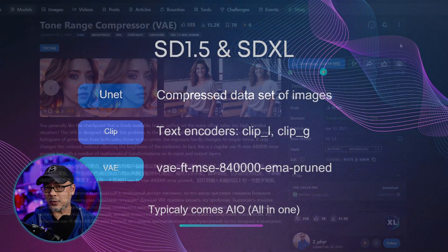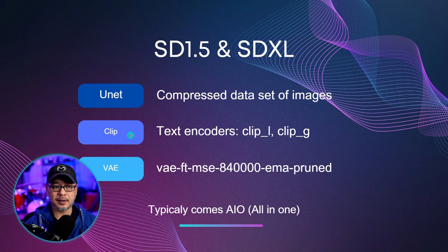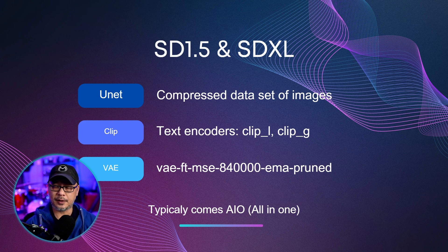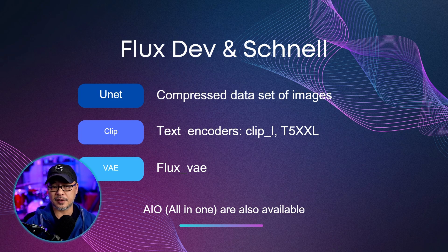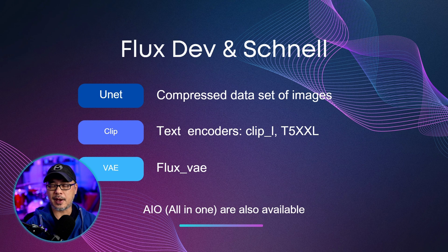As we got further into the development of SDXL, generally speaking, SDXL models were all-in-one — so the unit, clip, and VAE were all put together into one file. When we look at Flux Dev and Schnell, one of the differences would be the clip: it used the same Clip L encoder, but now it uses what's called a T5-XXL text encoder. We'll talk more about how that differs later. And just like SD 1.5 and SDXL, Flux had its own dedicated Flux VAE.